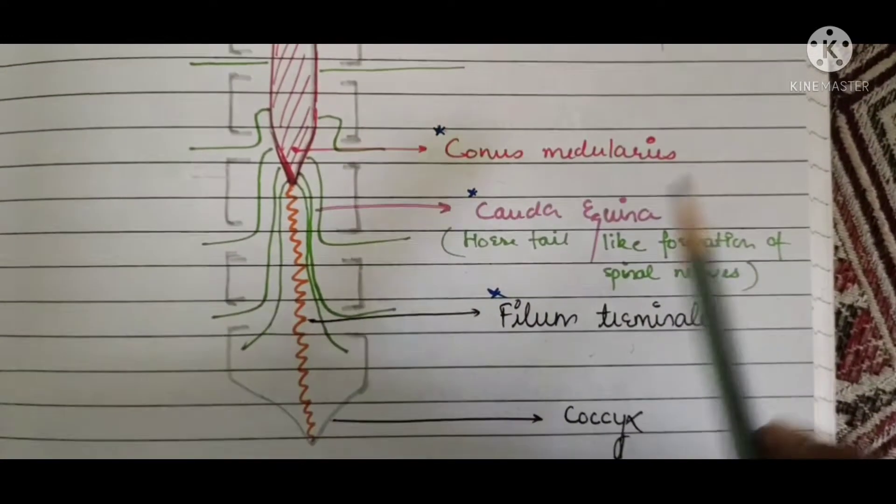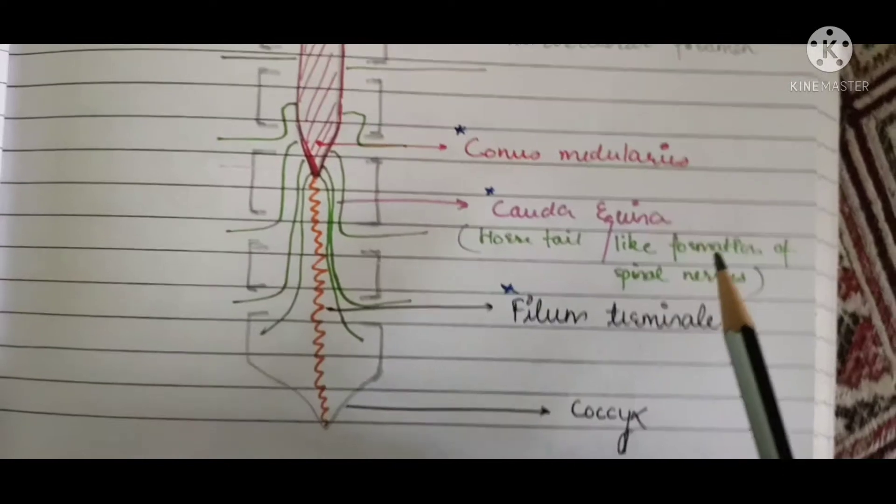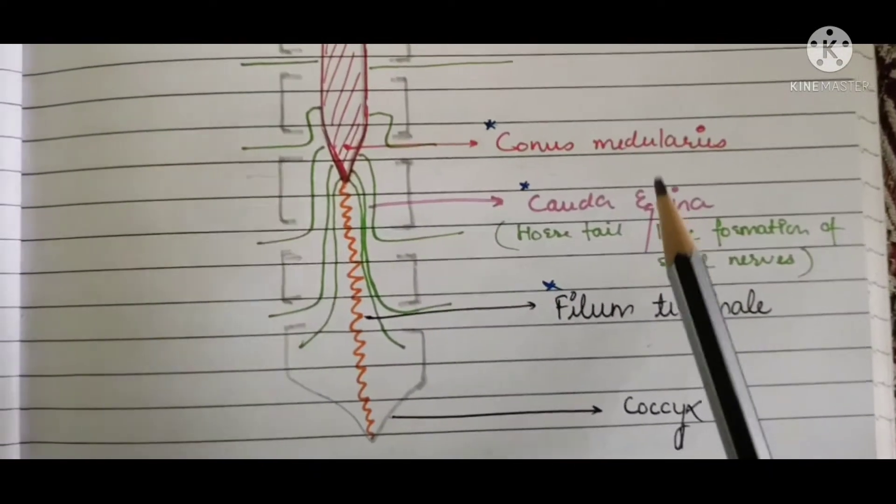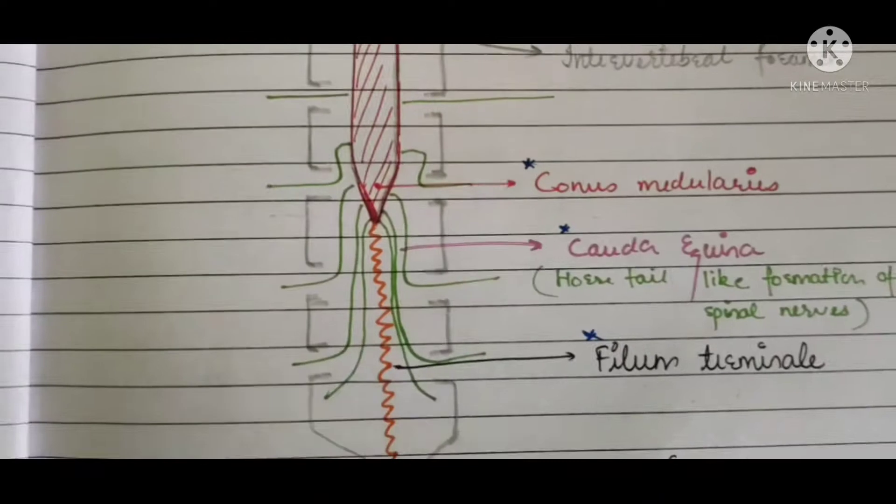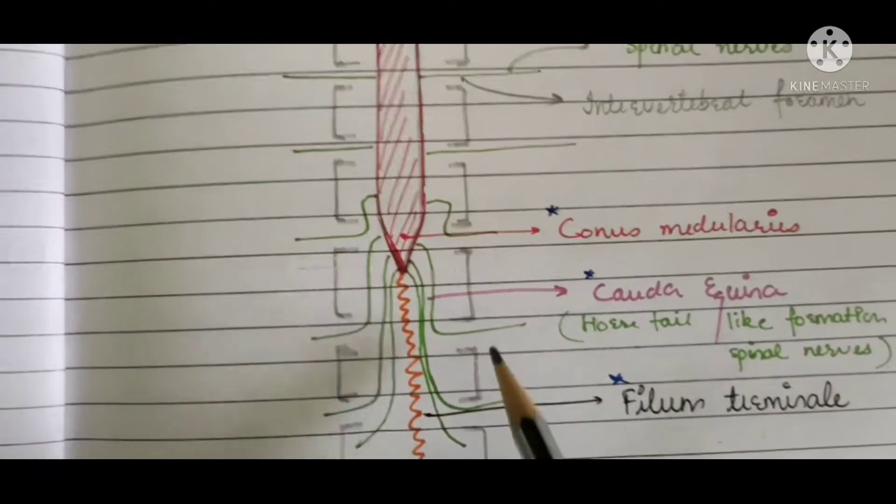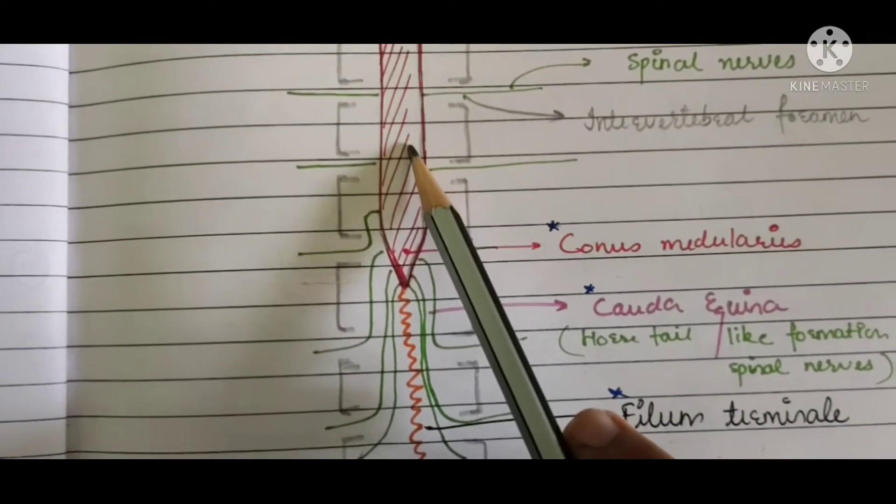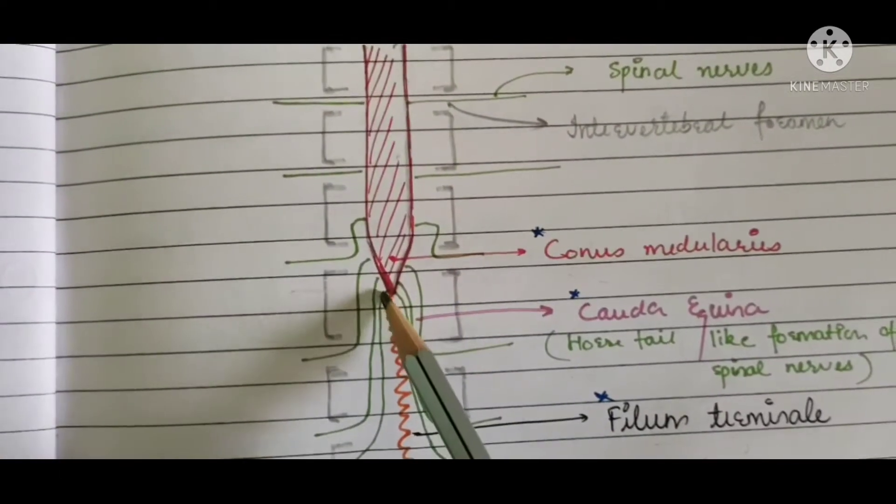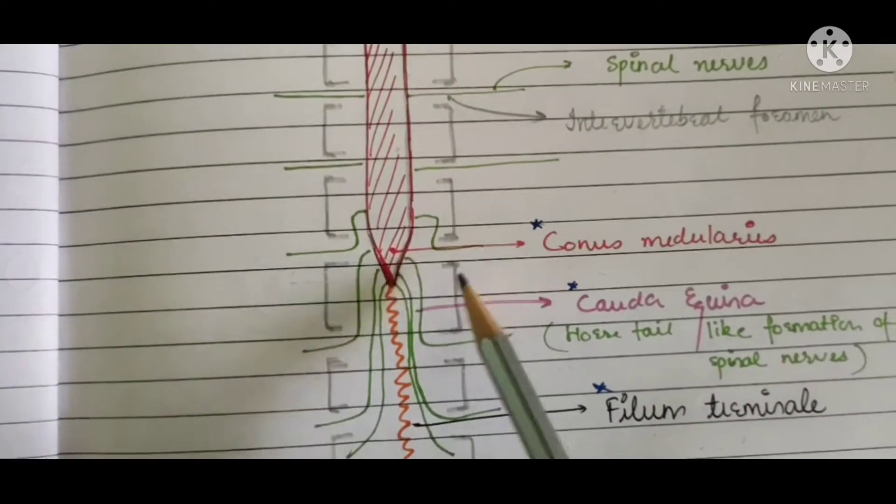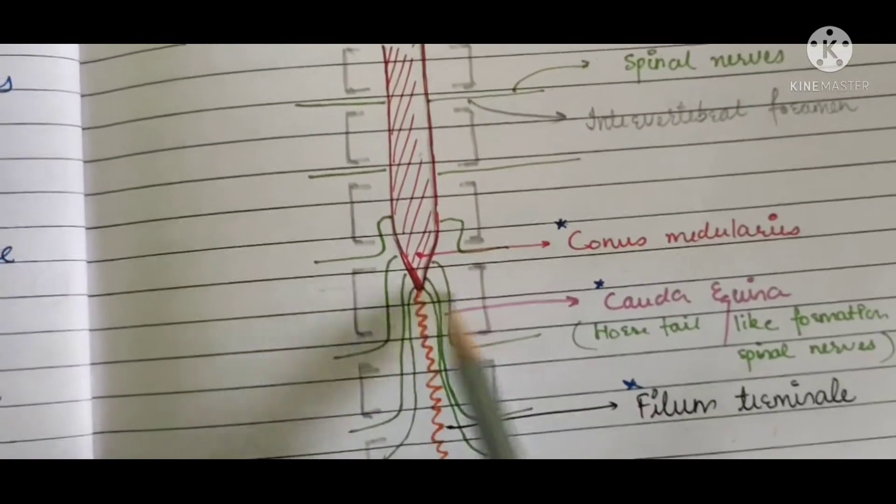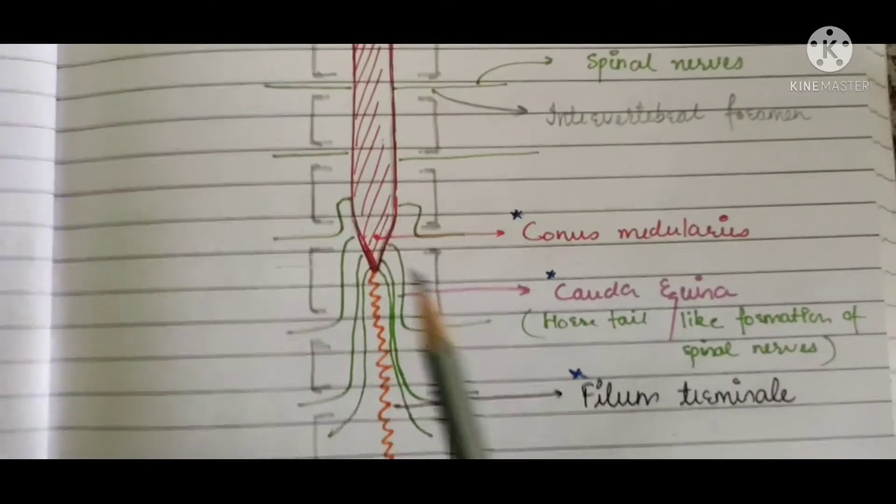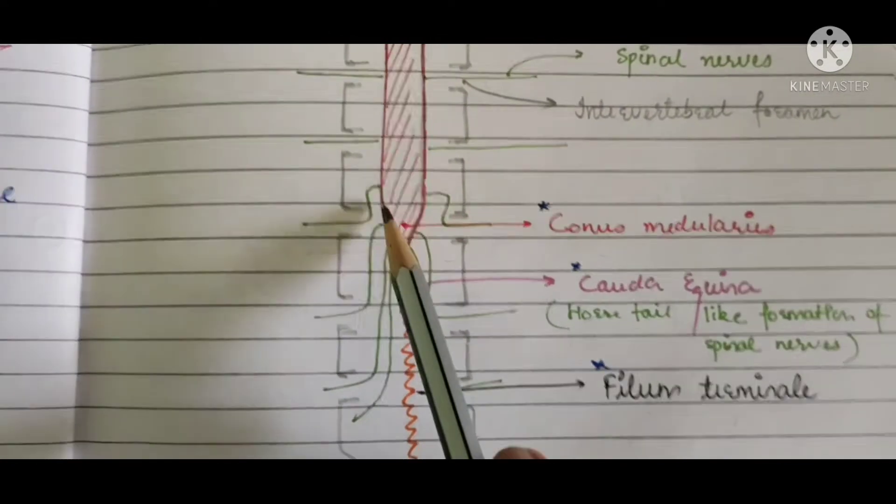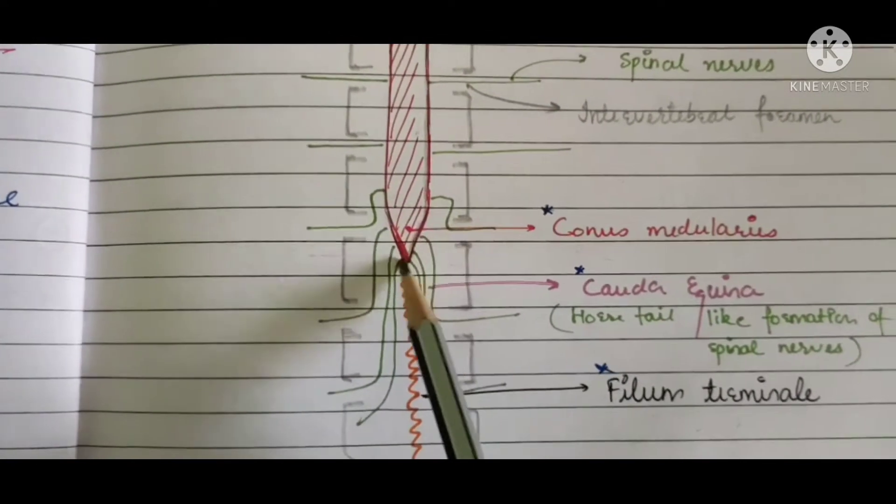So let's start with my first terminology, that is conus medullaris. As we know, the spinal cord begins at the level of foramen magnum and continues till the L1-L2 vertebra. So at the L1-L2 vertebra, the spinal cord terminates and this termination forms a conical projection or point.